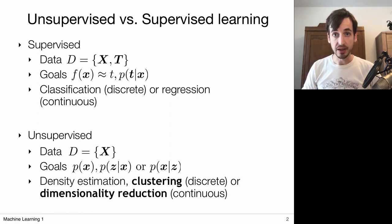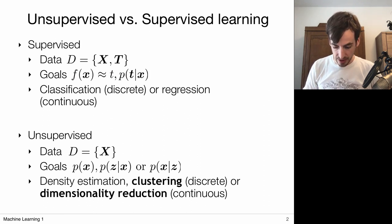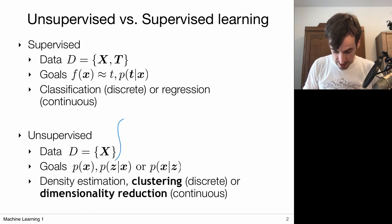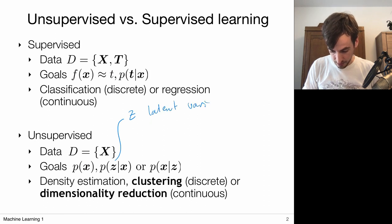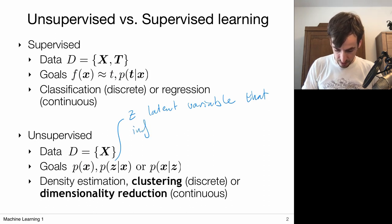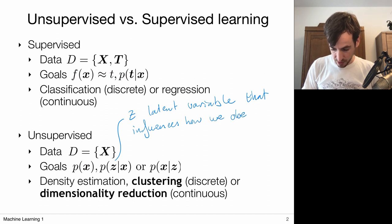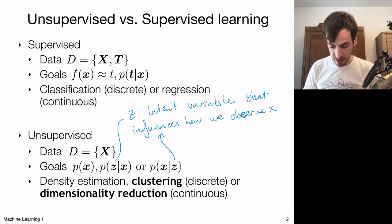But maybe more interestingly — and that is what we're going to focus on in the upcoming videos — is the notion of a latent variable. Let z be a latent variable that influences how we observe x. That's actually better represented by this conditional probability distribution. And the idea is as follows.